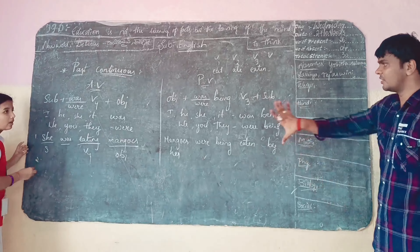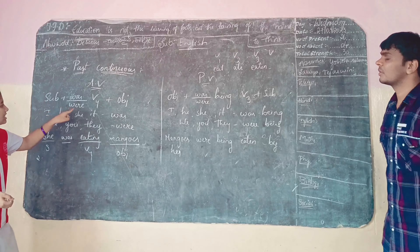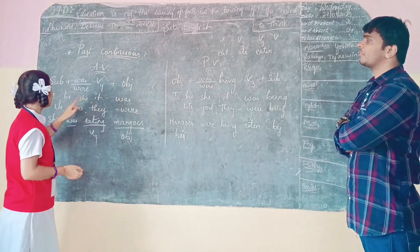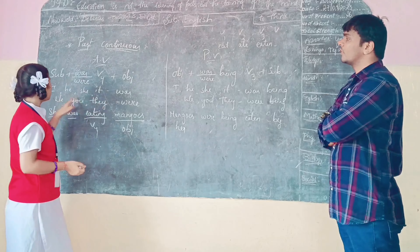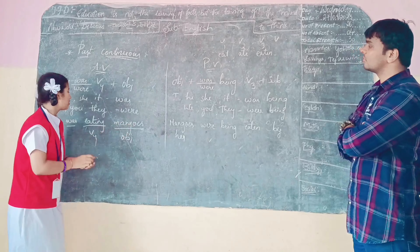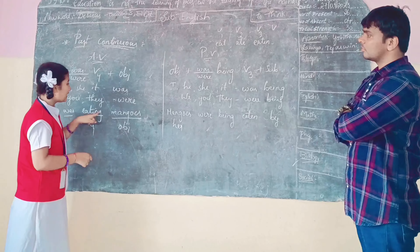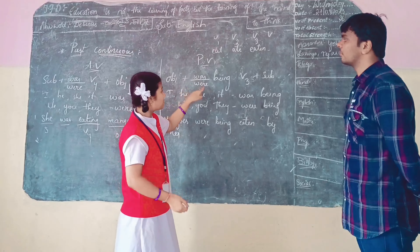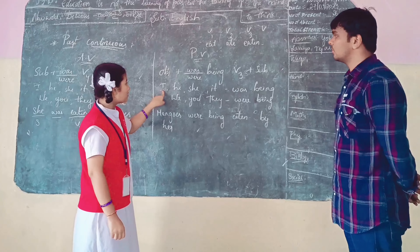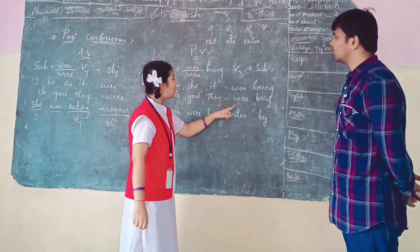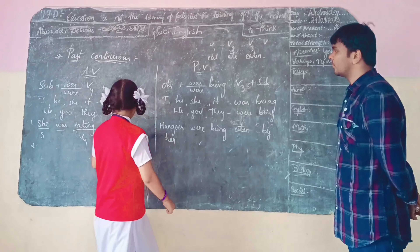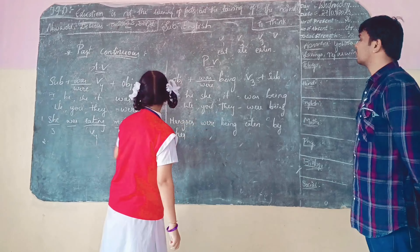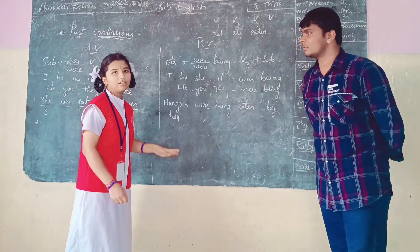One more example to summarize. The structure of past continuous active voice is: Subject plus was/were plus V4 plus object. The pronouns I, he, she, it take 'was'. The passive voice structure is: Object plus was/were plus being plus V3 plus by plus subject. For example: 'She was eating mangoes' becomes 'Mangoes were being eaten by her' in passive voice. Thank you.